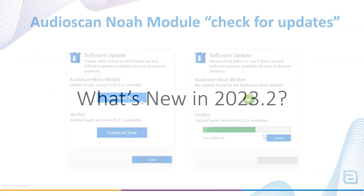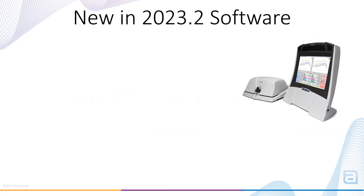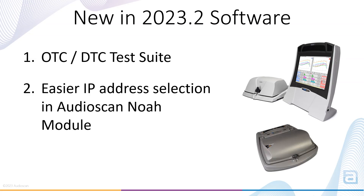So what's new in 2023.2? New features include an over-the-counter direct-to-consumer test suite for the Verifit 2, easier IP address selection in the Audioscan NOA module, and Japanese screen text on the Verifit 2 and Axiom.